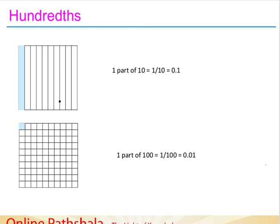Let's take an example of a square. In the square, I am dividing it into ten equal parts. If I talk about one part of the whole square which is divided into ten equal parts, we represent it as a fraction one by ten, and as a decimal as zero point one, where the dot represents the decimal place.